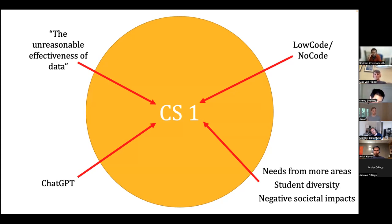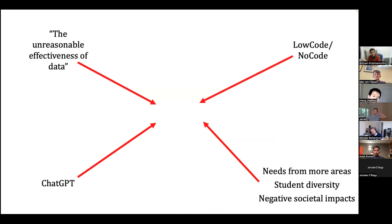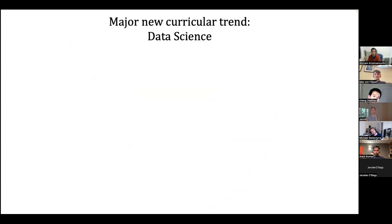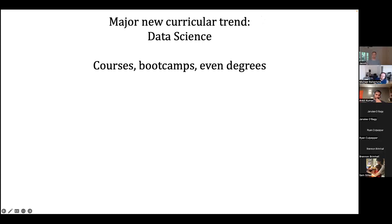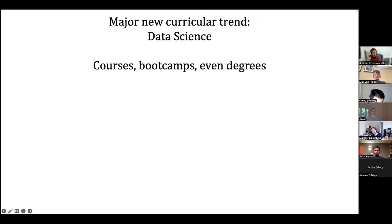CS1 is kind of under threat. There are lots of other things happening — if you go to many universities, you'll see a new major curricular trend of data science. Harvard Business Review declared data science the sexiest job of the year around 2010, and universities are finally catching on around 2020. There are courses, bootcamps, entire degrees — master's, bachelor's — and schools being announced in data science.